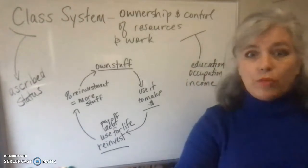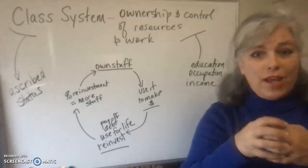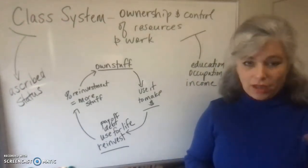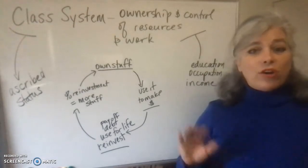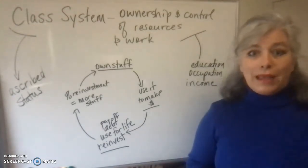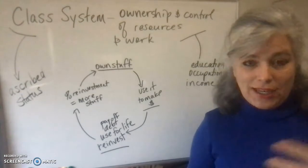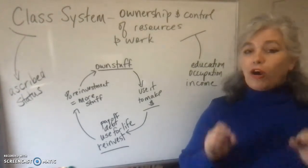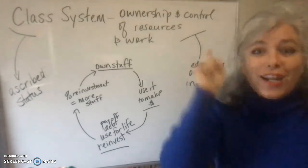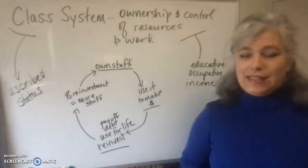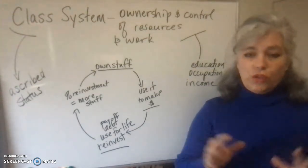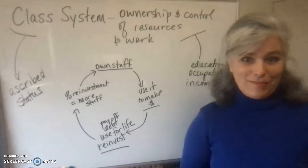Please start living and breathing a combination of income, occupation, and education. If you haven't heard me say it enough, make sure you write it down. These are three achieved statuses that you have to know go into social stratification in the United States.